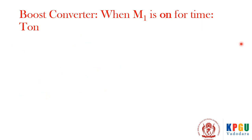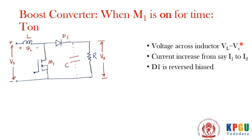Now let's see the working of the boost converter. When the switch is turned on, the voltage across the inductor is equal to the supply voltage Vs, so the current increases from i1 to i2. We are discussing this operation in steady state, where the switch operates at a high frequency — as high as one kilohertz — and the output voltage and current have stabilized.